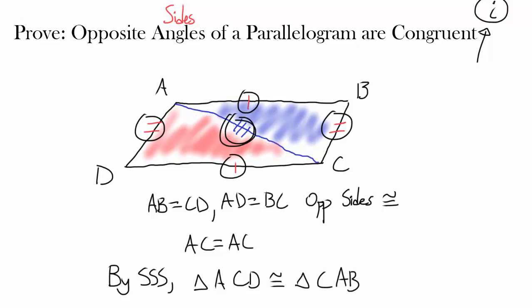So what do we know now? We know the corresponding parts of congruent triangles are congruent. So you know angle ADC has to be congruent to angle CBA, so you know these two angles are congruent because they are corresponding parts of two congruent triangles. So you have these two congruent angles.